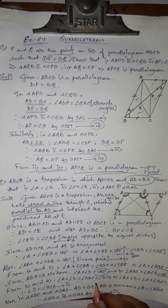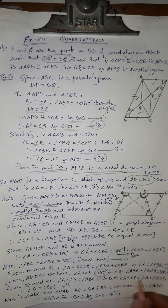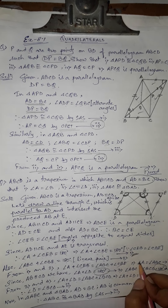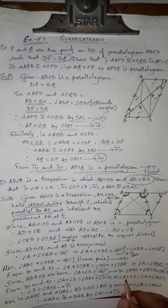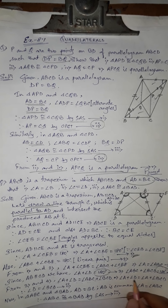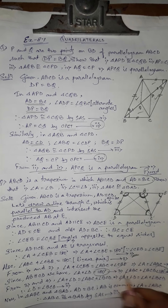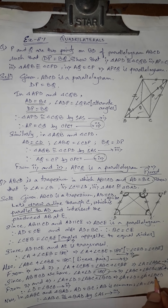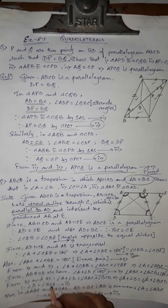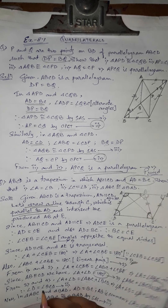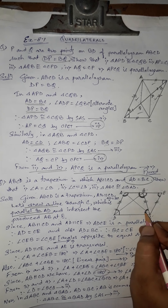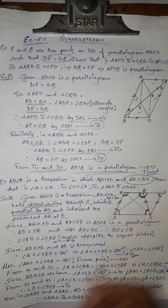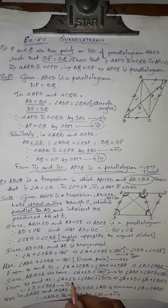From number three and four, since both equal 180 degrees: angle A plus angle D equals angle ABC plus angle BCD. Since we proved angle A equals angle ABC, we replace angle ABC with angle A. Cancelling angle A from both sides, angle D equals angle BCD — that is, angle D equals angle C. This is the second proof.